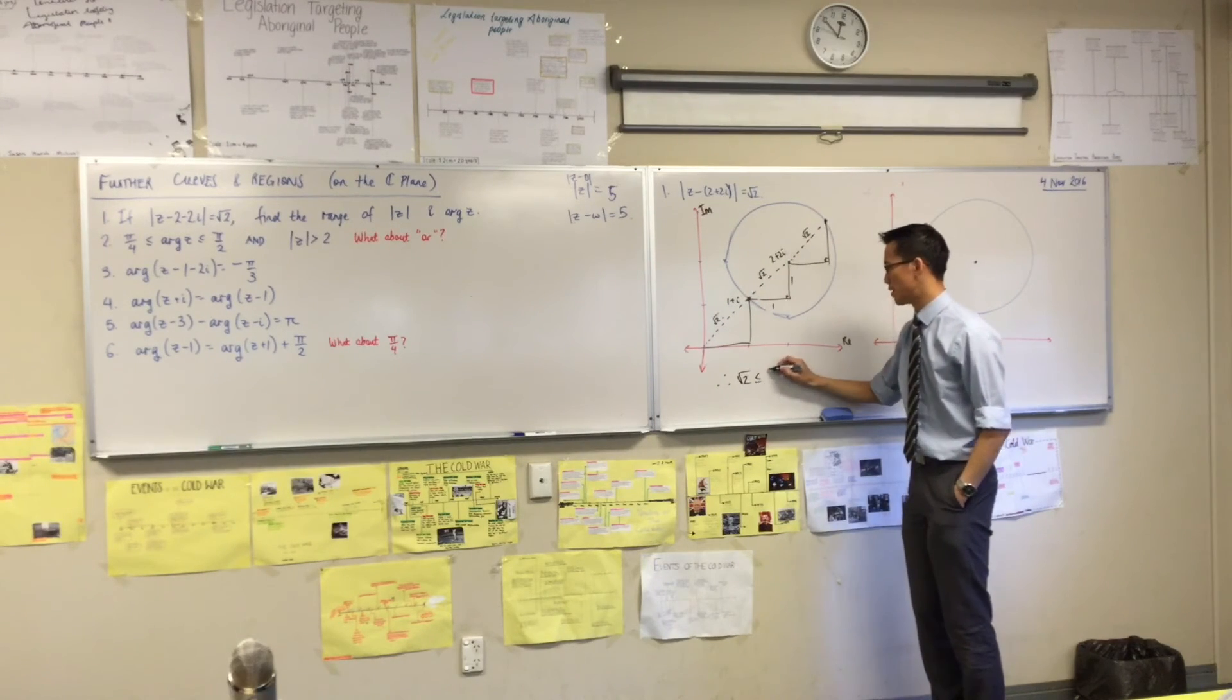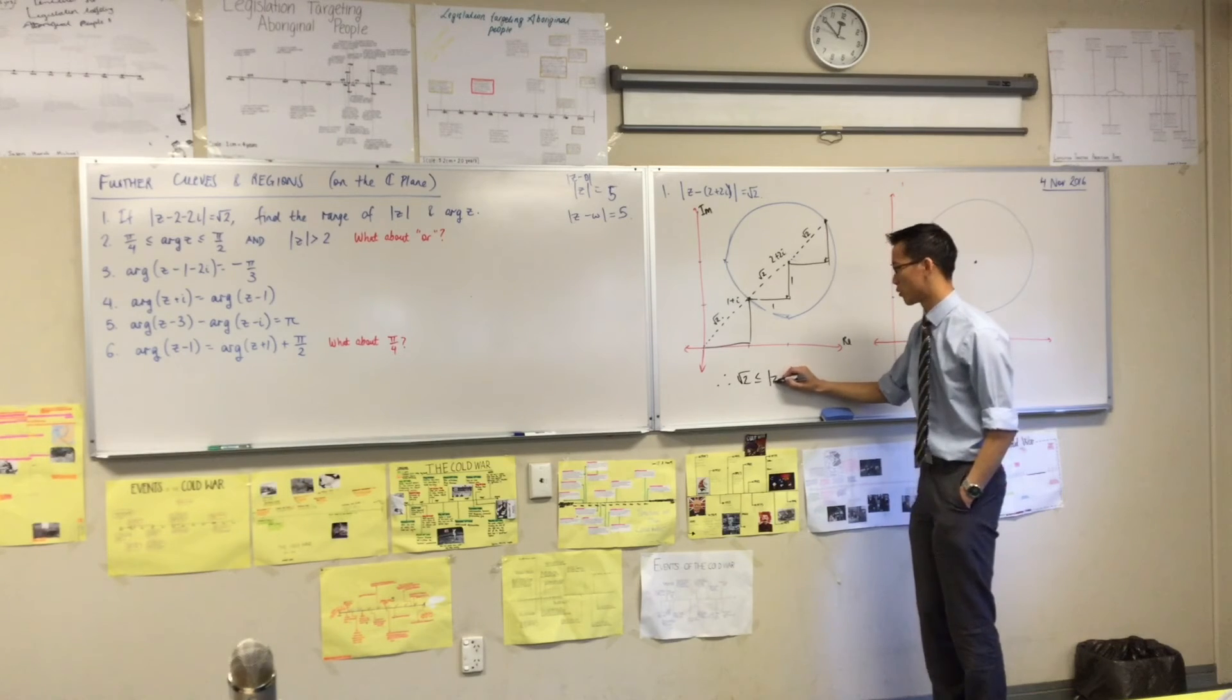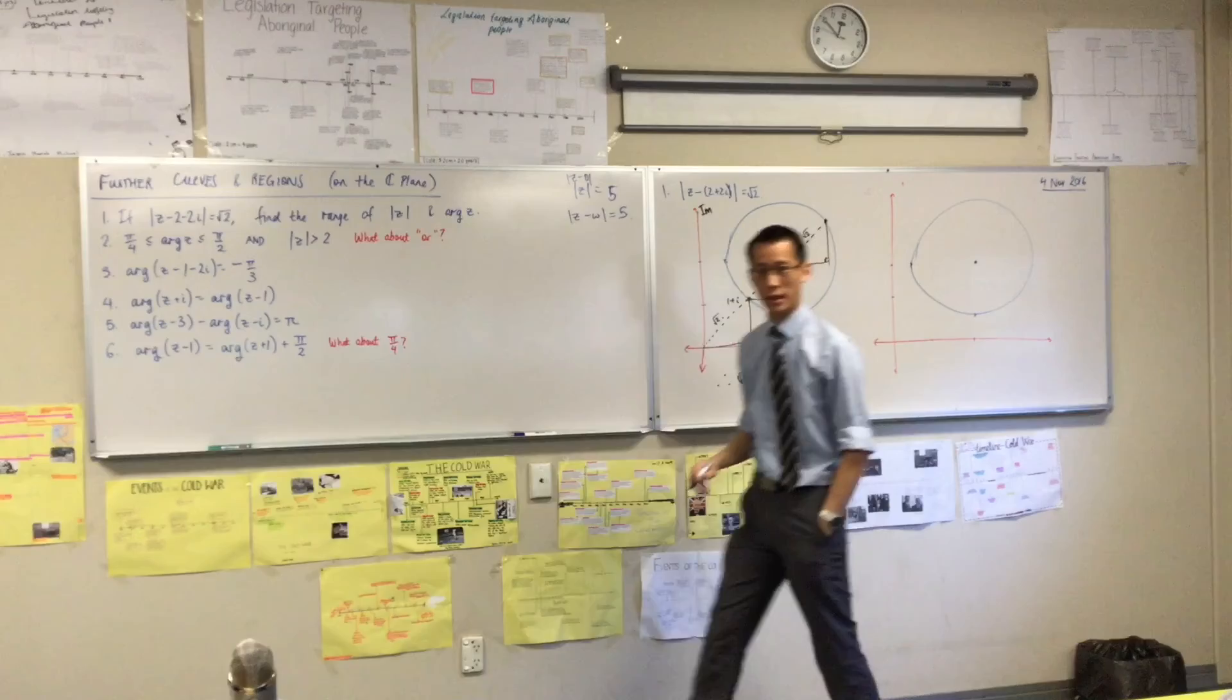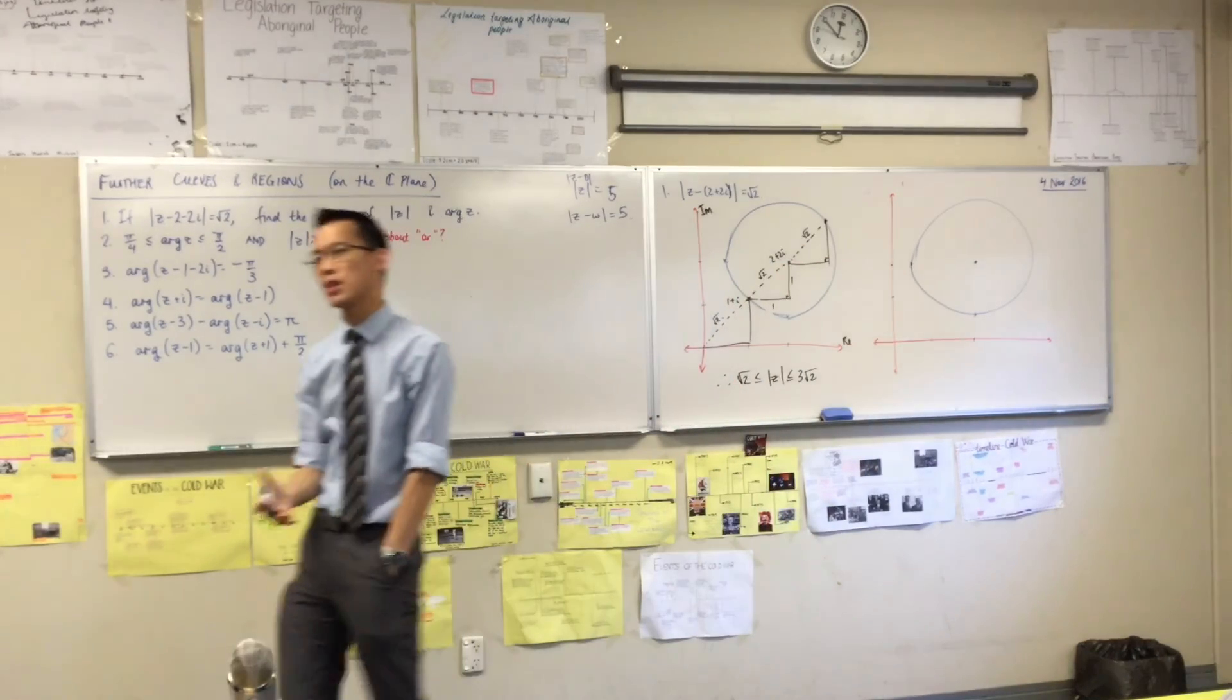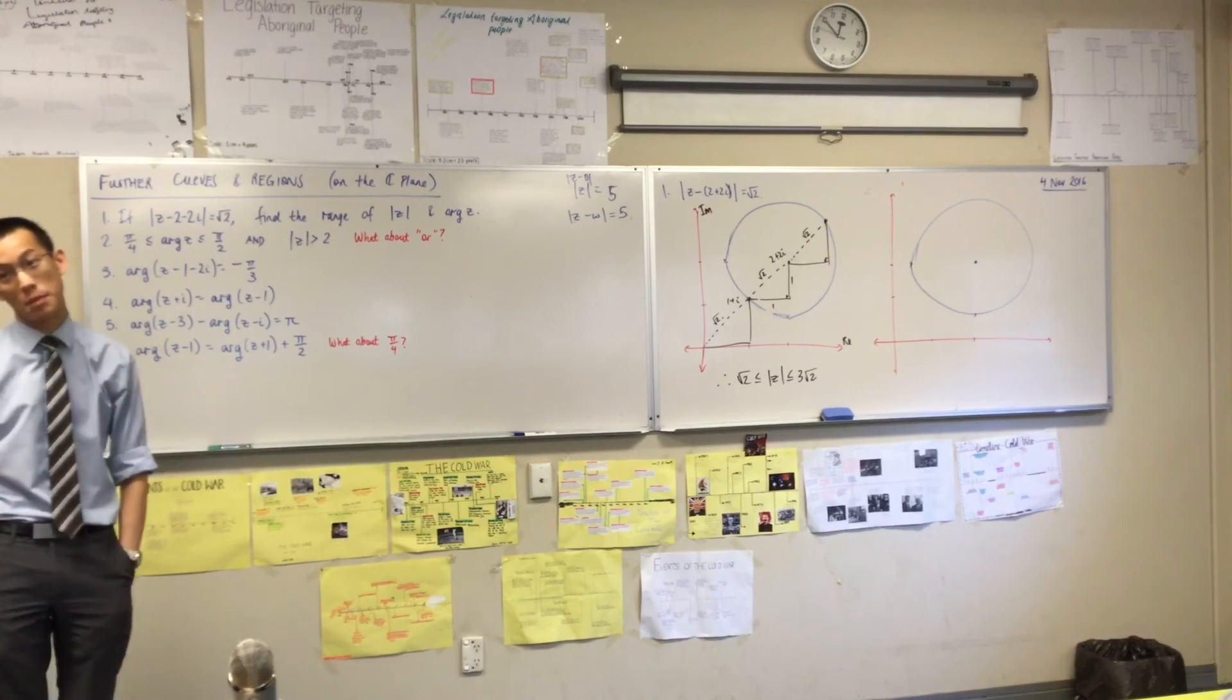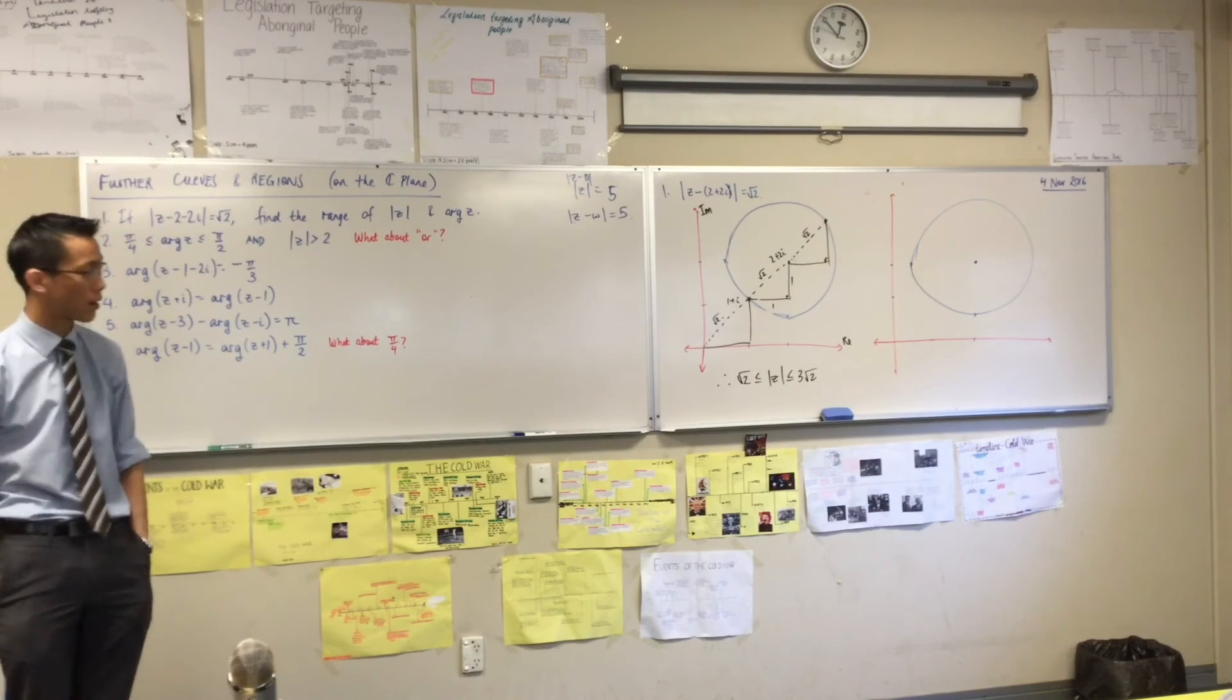So, therefore, off of that, here's the smallest it can be. Here's the biggest it can be. So, root 2 must be less than or equal to mod z, which is less than or equal to 3 root 2. That's the range. You're used to thinking of range just about y values, but range can refer to anything you like. You just want the biggest and smallest things it can possibly be.